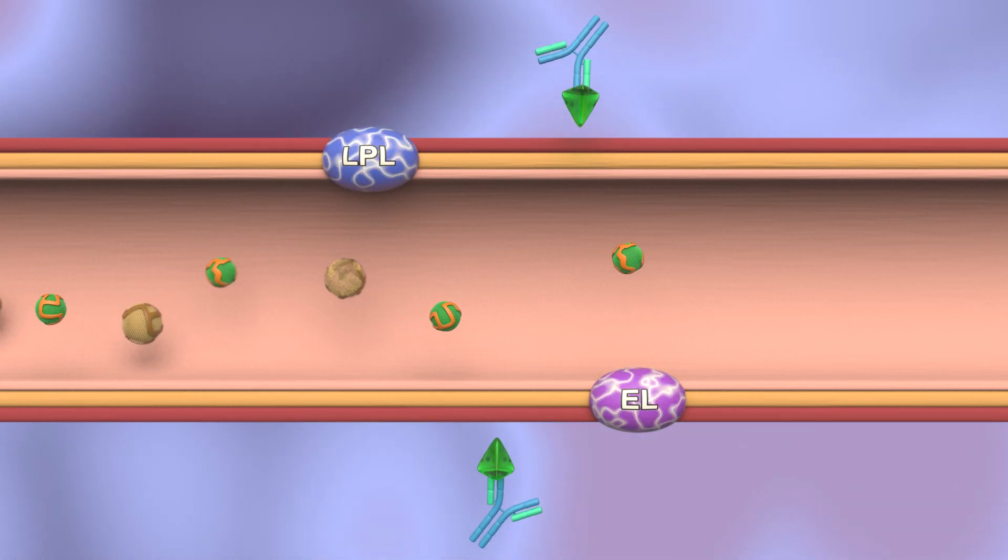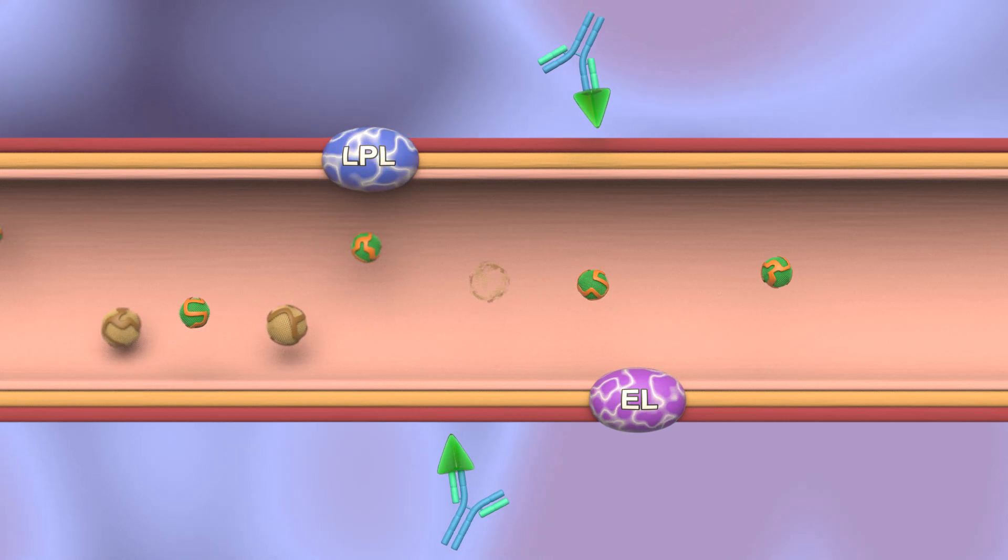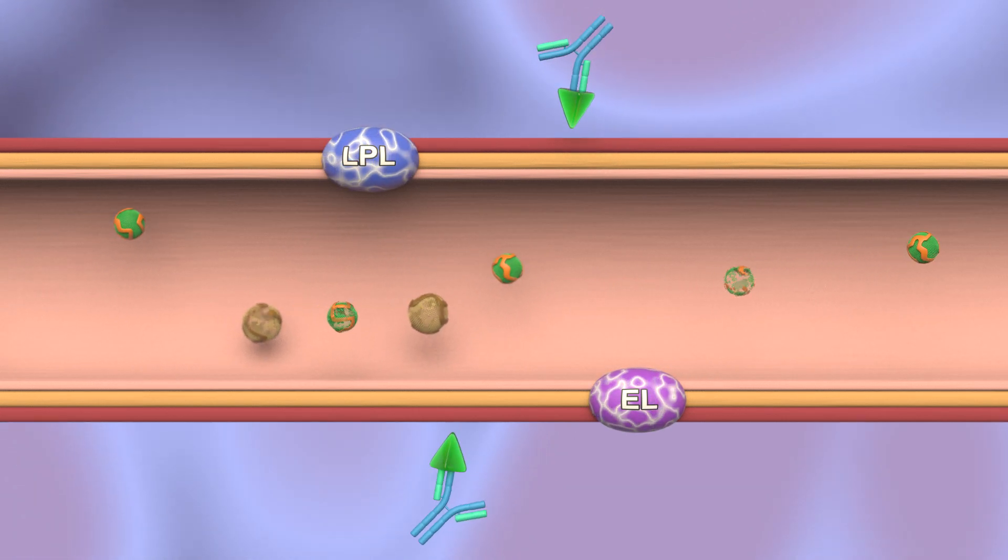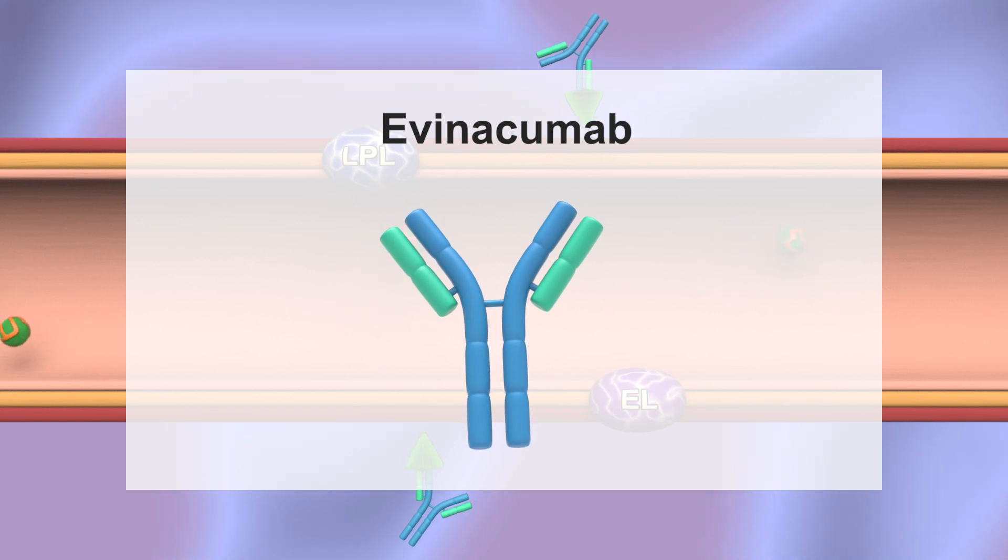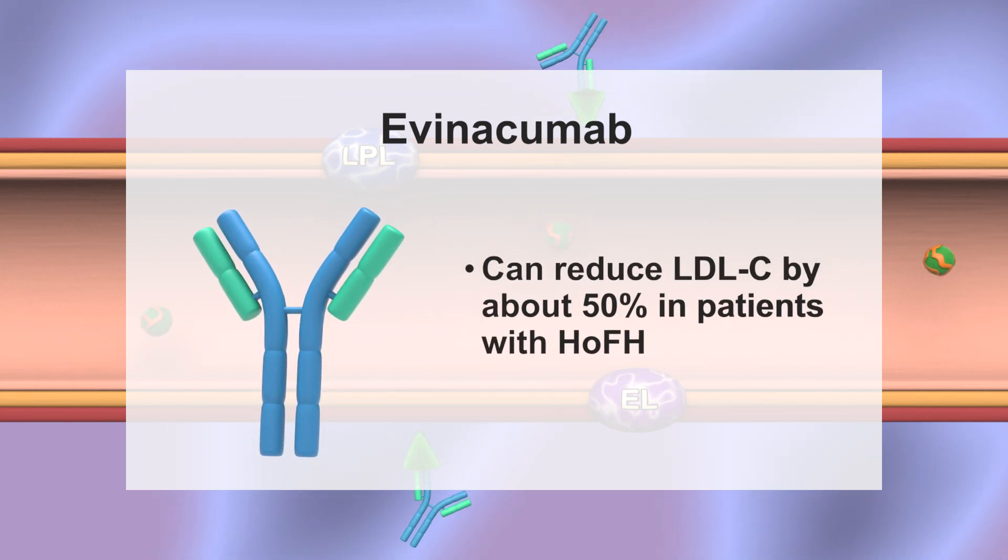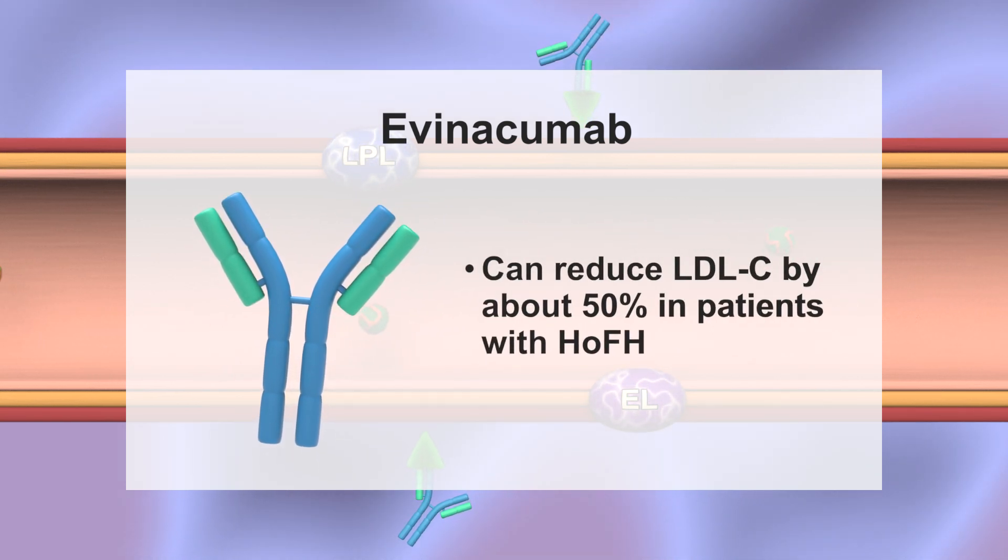This remodels VLDL, resulting in remnant particles that are rapidly cleared and depletion of LDL-C precursors. Consequently, evinacumab can reduce LDL-C by about 50% in patients with HOFH.